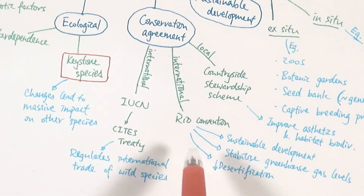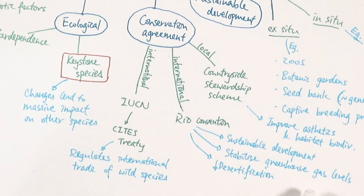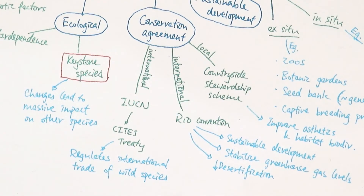The second international agreement is the Rio Convention, which has three main parts: sustainable development — ensuring enough supplies for future generations; stabilizing greenhouse gas levels to slow down or reverse global warming; and decreasing desertification, where deforestation often leads to the formation of deserts, making it impossible to grow crops and creating an extreme environment for other organisms.